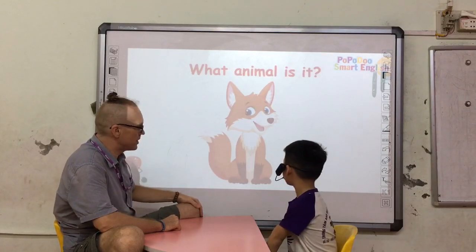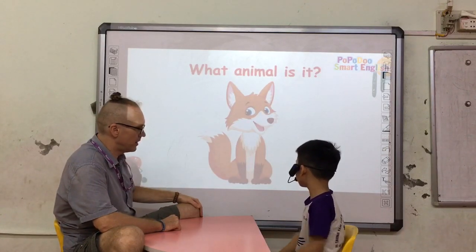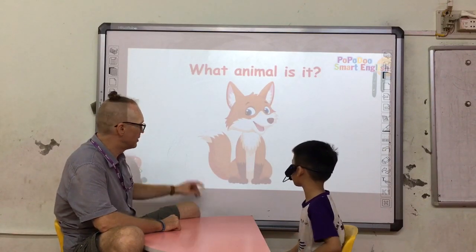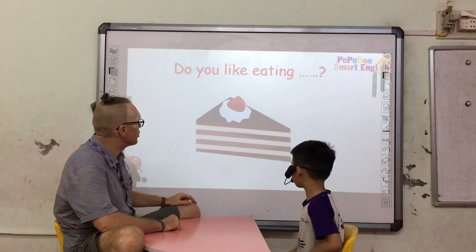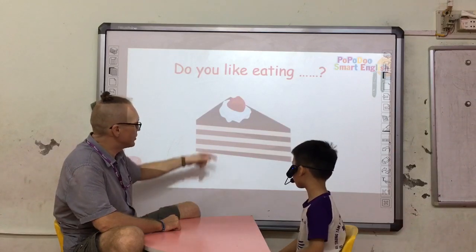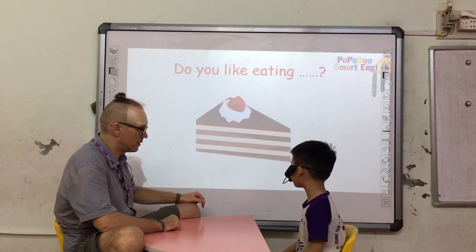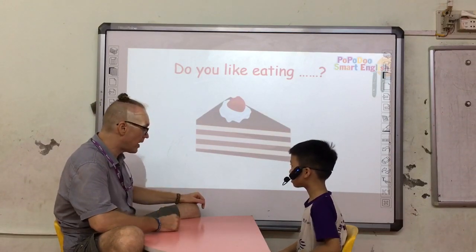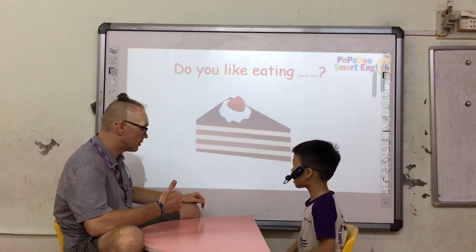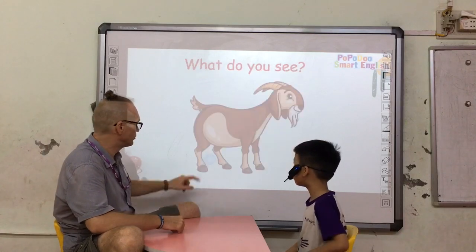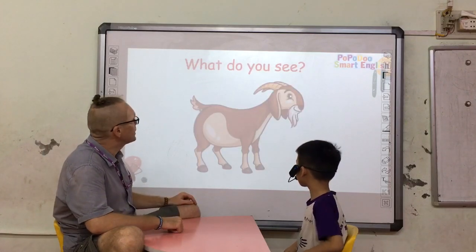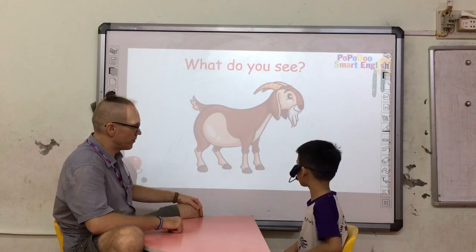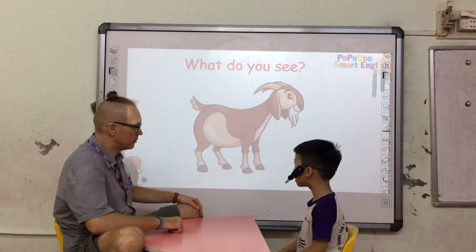What animal is it? It's a fox. Very good. What do you see? I see a cake. Do you like eating cake? Yes, I do. What animal do you see? I see a goat.